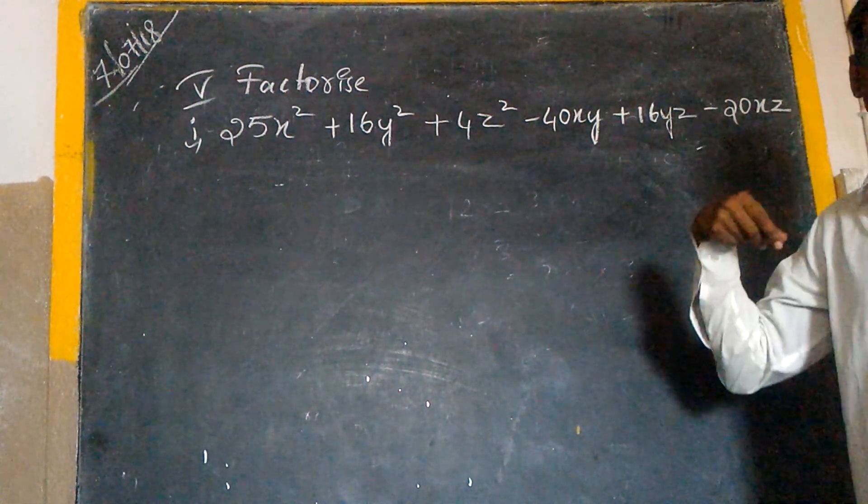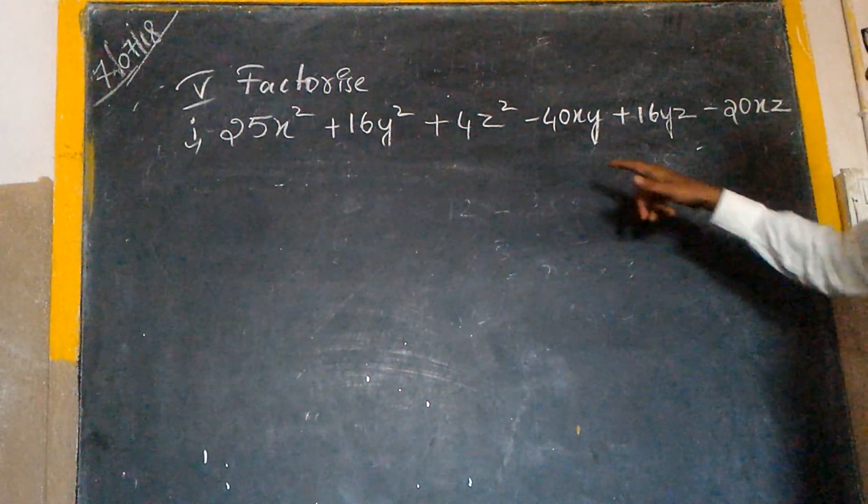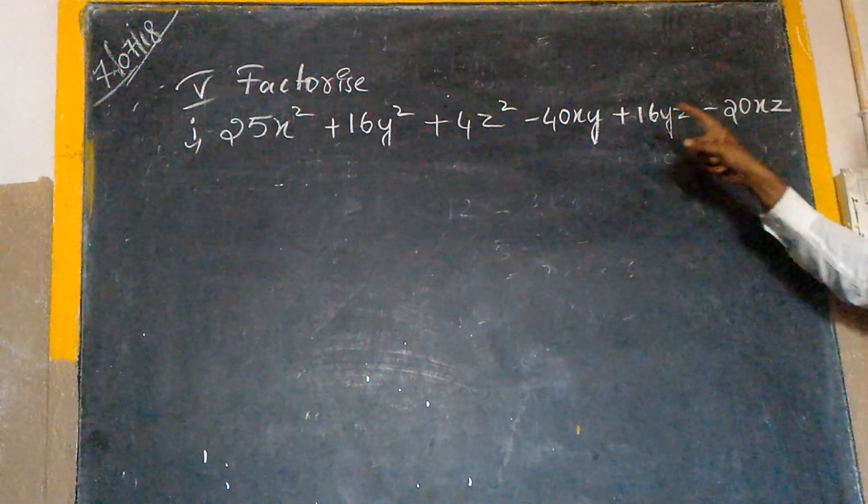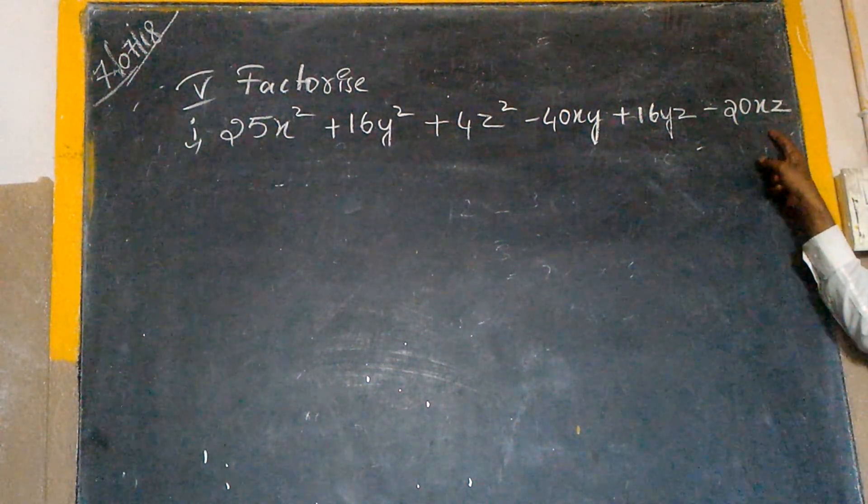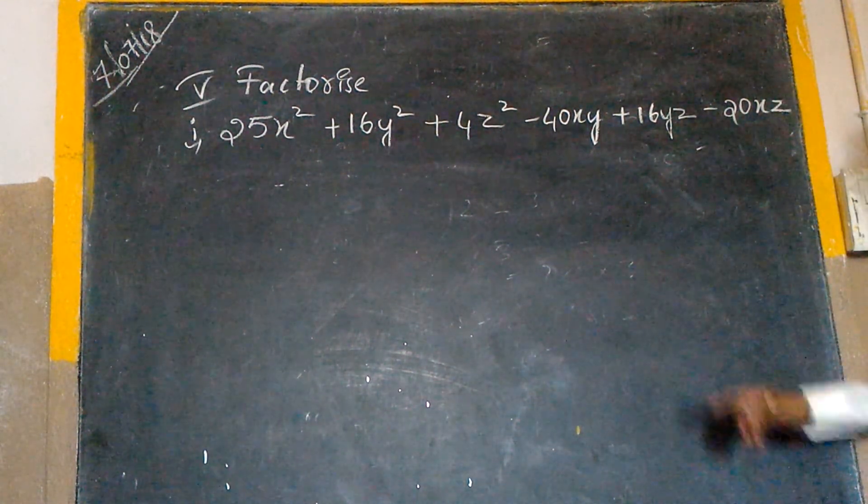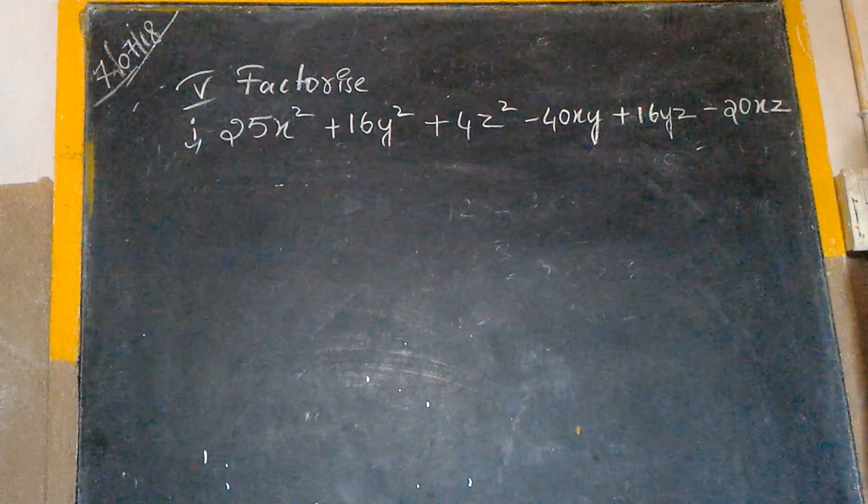Before going to factorize this one, first here we have to make two terms. See here, these two are negative terms. What is the common letter between these two? X. X should be negative, that's all.